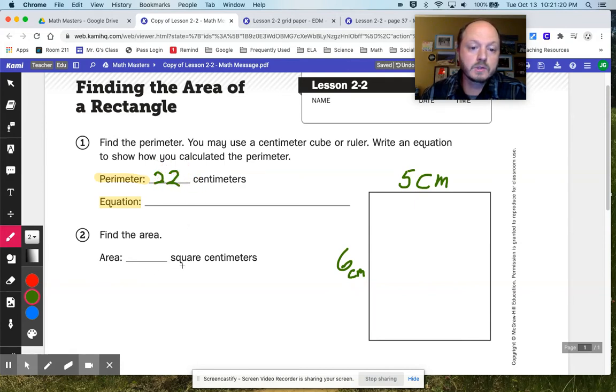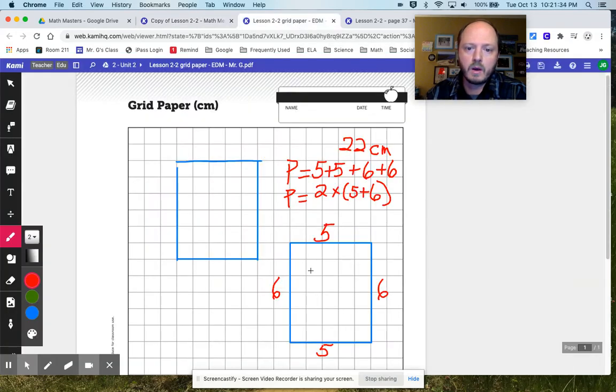All right, and we could have done it in a different way. We could have said two times five plus six as well, right? Or we could have said two times five and plus two times six. All of those are combinations that will equal the same thing. They're kind of little cousins of the same formula. So, we have five and five, six and six. All right, and that adds up to, or is calculated out to, 22 centimeters.